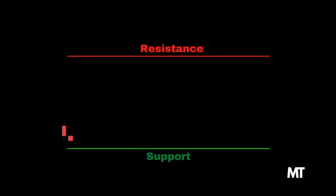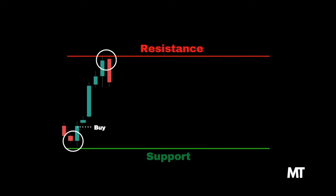Hello traders, in this video we are going to look at market ranges. Market ranges are also known as market consolidation. As we saw in the previous video, market ranges at the end of a bearish trend are also known as accumulation, whilst market ranges at the end of a bullish trend are also known as distribution.